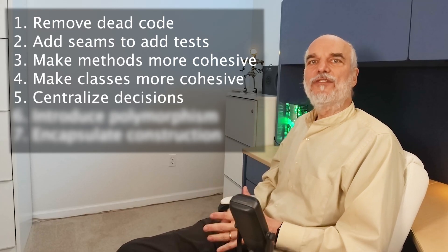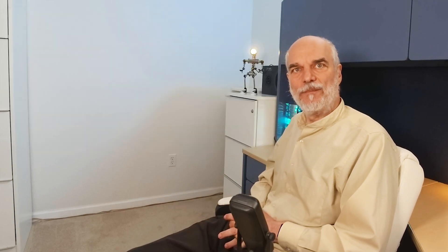Number five: centralize decisions. As classes and methods become more cohesive, it's possible for business rules to become spread out across a system, making it difficult to read or modify. Try to centralize the rules for any given process. Extract business rules into factories, if at all possible. When decisions are centralized, it removes redundancy in our code, making it more understandable and more straightforward to maintain.